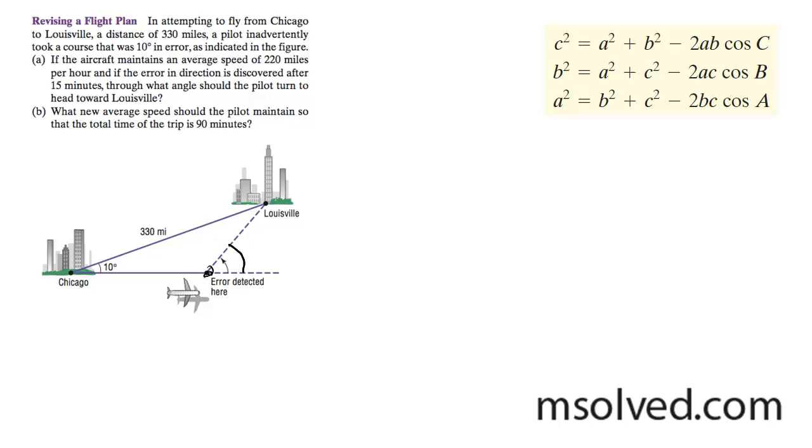So how we're going to find this first is we're going to use the law of cosines. I know how far it is from Chicago to this point where the pilot turns because it says they're traveling for 15 minutes before he makes a correction, and he's heading at 220 miles an hour. So that means that he had traveled one-fourth of an hour times 220, that will be 65 miles.